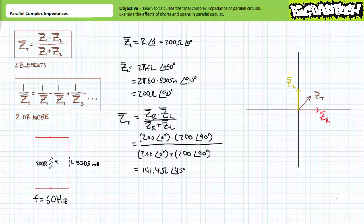Using the quick and dirty calculation method, we arrive at a total complex impedance value of 141.4 ohms at an angle of 45 degrees. Note the total impedance magnitude of this parallel arrangement is less than either element's magnitude — this is to be expected given parallel arrangements. The positive 45 degree angle indicates ZT, the total impedance of this parallel relationship, appears to be a mix of both the resistive and inductive nature of these two elements. This is to be expected given the equal magnitudes of the resistive and inductive components comprising this relationship. This balanced condition, however, is only true at 60 hertz.